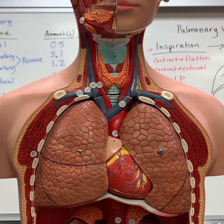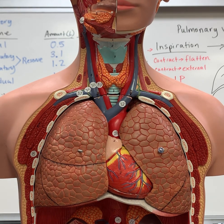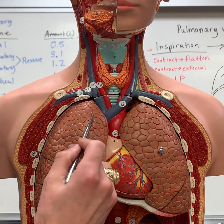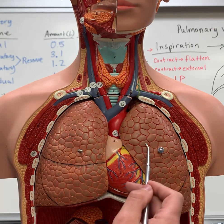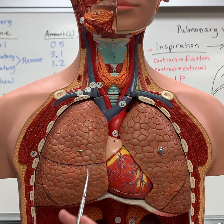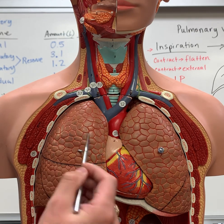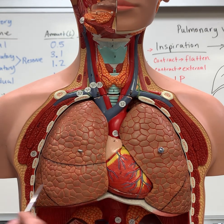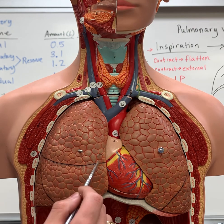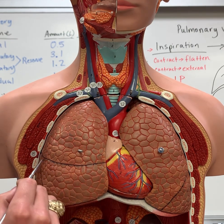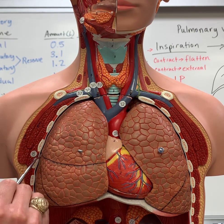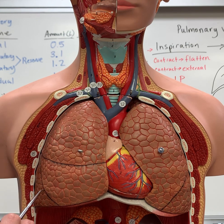Now let's look at some of the external organs here. First off, this is the right lung, this is the left lung, and then you have the three different lobes: superior, middle, and inferior lobe. You also have the different fissures — this is the horizontal fissure, and then this one over here is the oblique fissure.